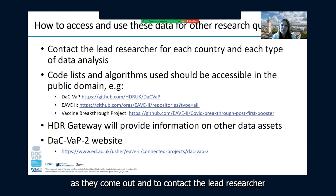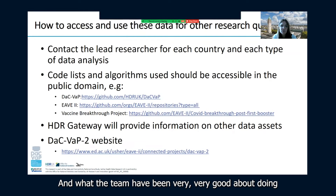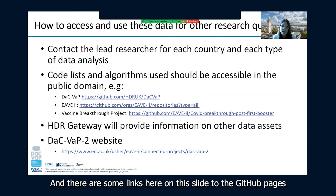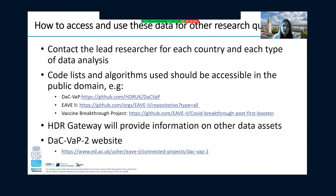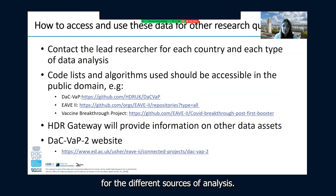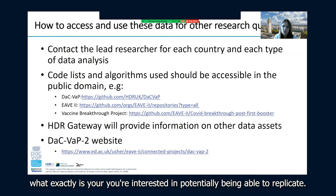I think it's important to contact the lead researcher for each country and each type of data analysis. There are always contact details. The team have been very good about ensuring that as analyses are undertaken and going into the public domain, the code lists and algorithms that underpin all of those analyses are accessible. There are some links here on this slide to the GitHub pages where various different code lists and algorithms can be found for the different sources of analysis. This will depend upon what exactly it is you're interested in potentially being able to replicate.